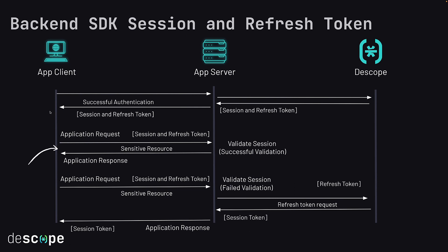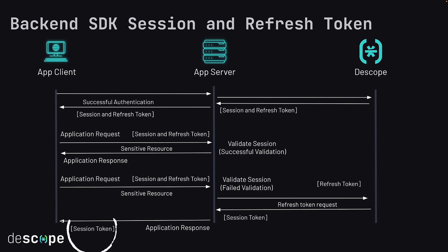If you decide to store the session and refresh token on the application client, the client must send both tokens to your application server, which can then validate the session token before returning any sensitive resources. In case the validation of the session token fails, your application server must contact Descope for refreshing the session token using the refresh token. The Descope service will return the new session token, which you then send back to the application client for storage and future requests.